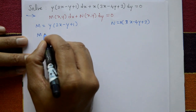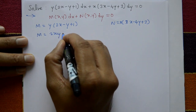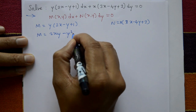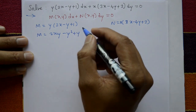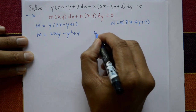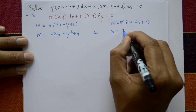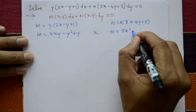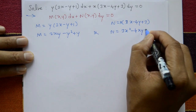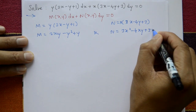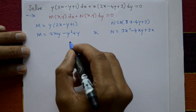Expanding: M = 2xy - y² + y, and N = 3x² - 4xy + 3x. Now check whether the equation is exact or not.